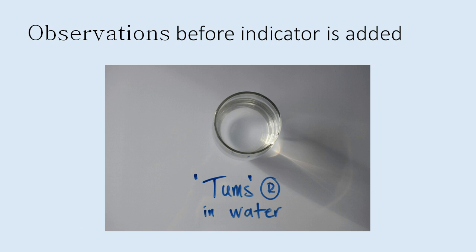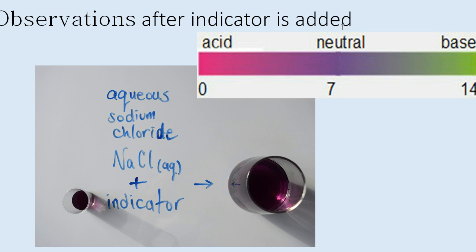Now I'm going to run through the data of what these look like when mixed with the chemical indicator. These are the observations after the indicator is added. Here, I used maybe about half an ounce of indicator. There's the aqueous sodium chloride in that cup, and I've added the indicator — and it sort of looks that color. Ask yourself: is it neutral, is it acid, is it base? You're really just going to record the color in your data table and make that judgment about acid, neutral, base, or unknown later in your analysis section.